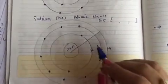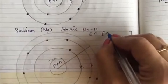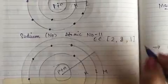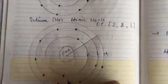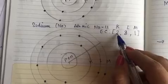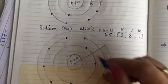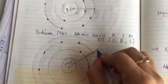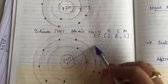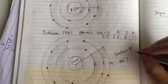Next is Sodium — symbol Na, atomic number 11. Its electronic configuration is: 2 in the first orbit, 8 in the second orbit (total 10), and 1 remaining electron goes into the third orbit (M shell). So Sodium has K, L, and M shells. The radius of sodium goes from nucleus to the M shell, whereas neon's radius only goes to the L shell. Therefore, the radius of sodium is greater than that of neon.